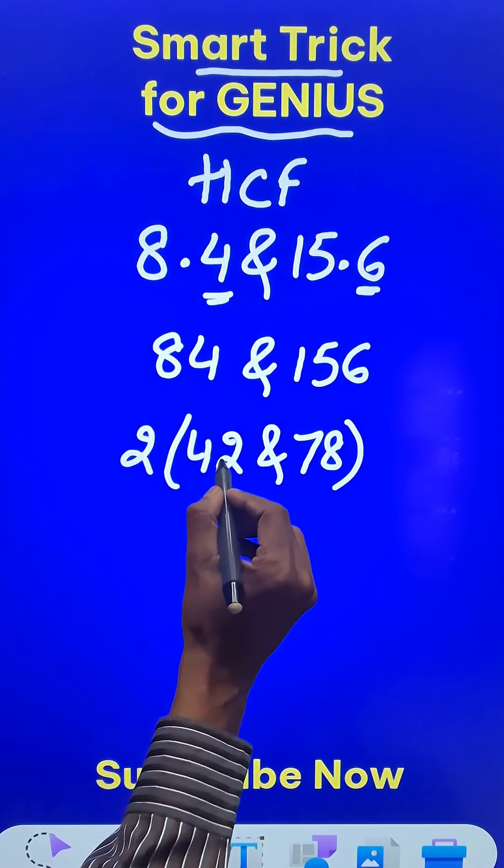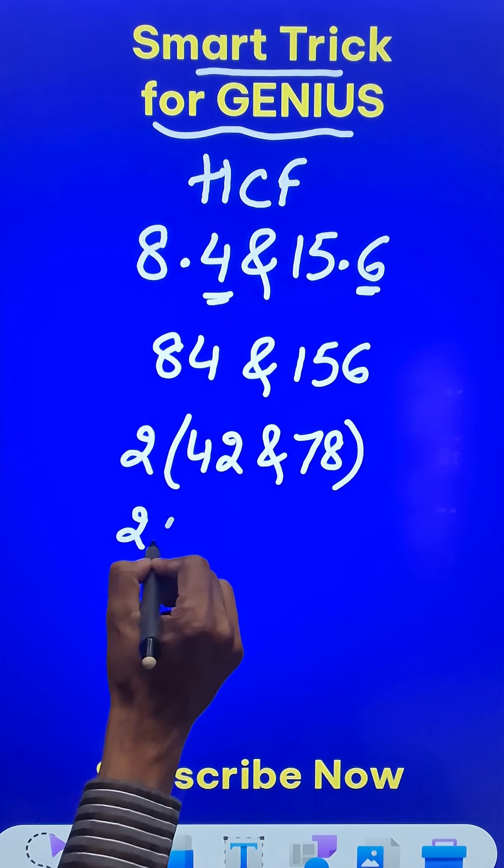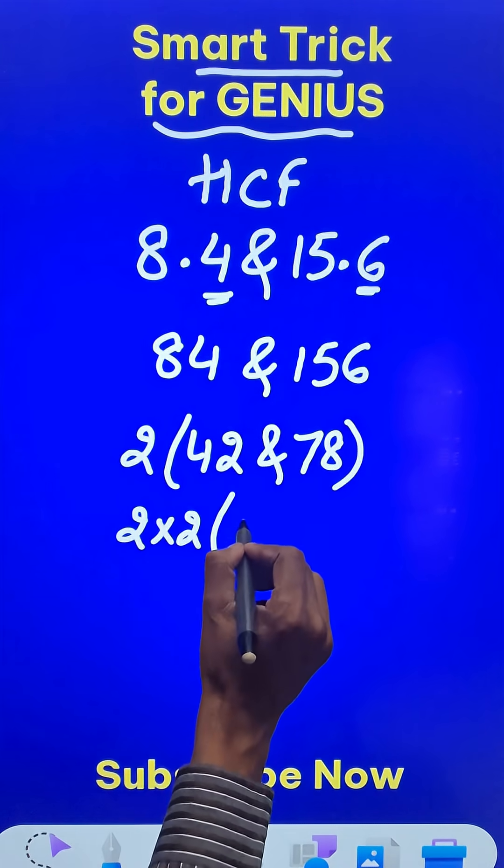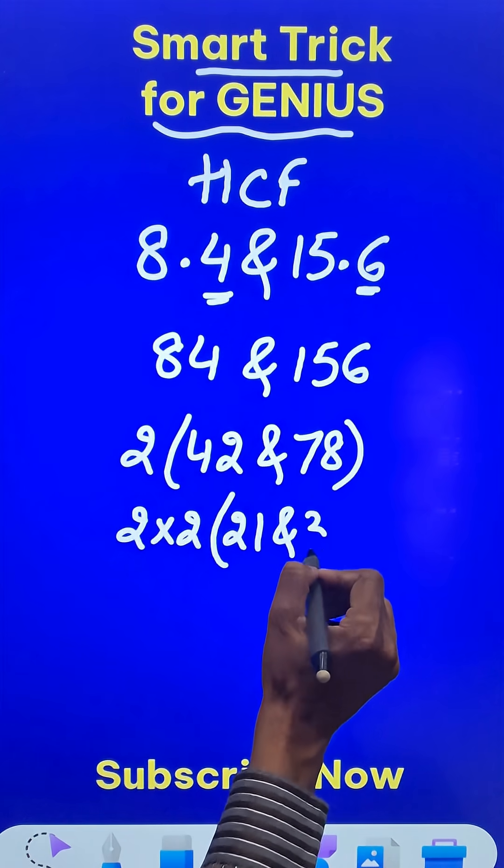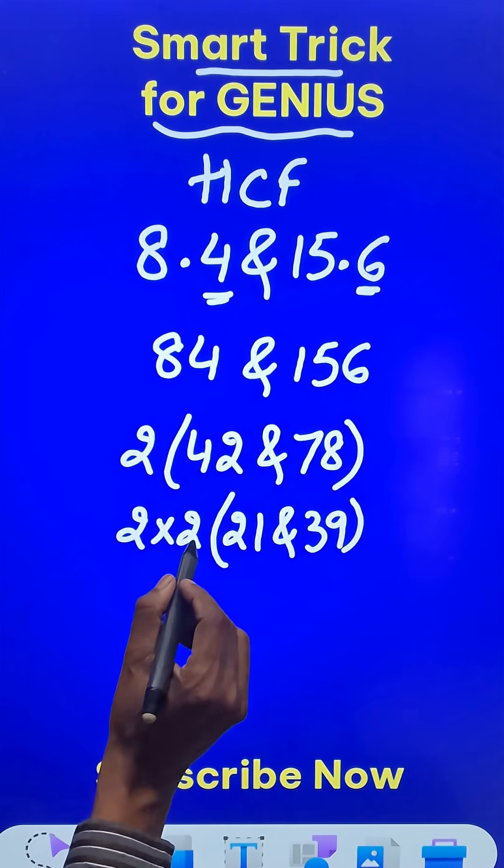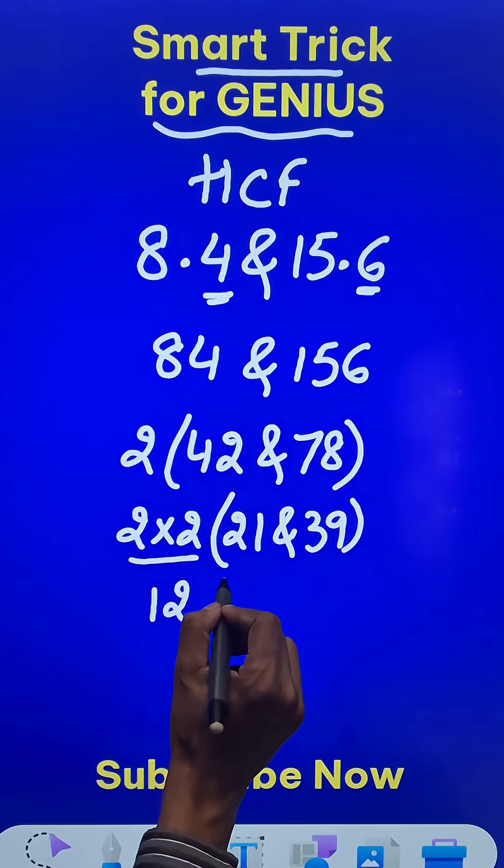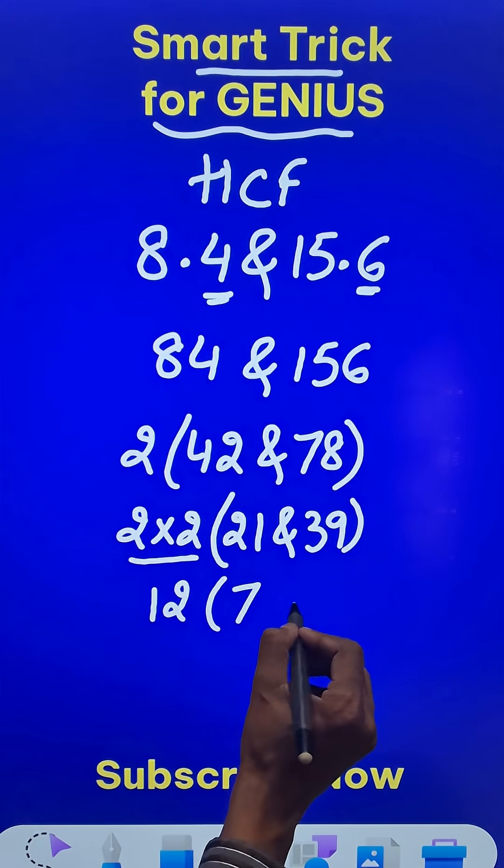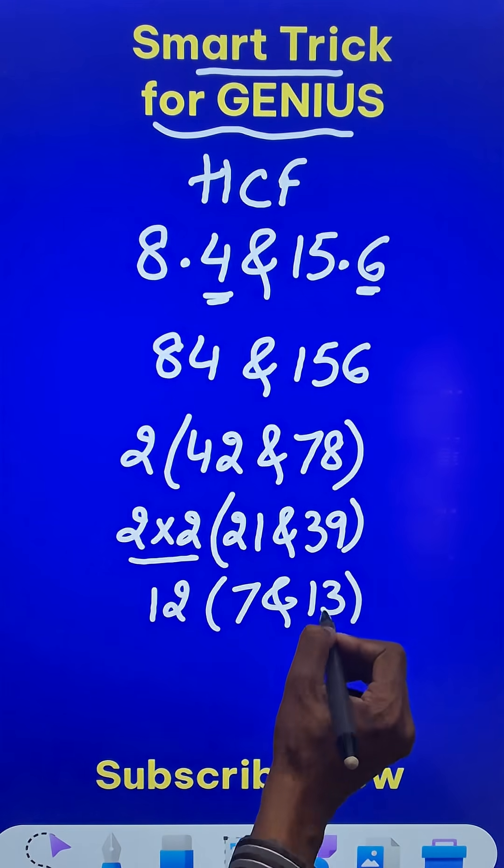Likewise, when you divide 42 and 78 by 2 again, so 2 times 2, you get 21 and 39. Now 21 and 39 are divisible by 3. So 2 times 2 times 3 is 12, and you get 7 and 13.